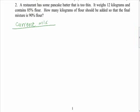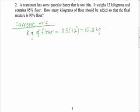It wants to know how many kilograms of flour we need to add so that the final mixture is 90% flour. First figure out the current mix. How many kilograms of flour? It's right now 85% flour. What are we going to do to figure out how many kilograms is in the current mix? Lauren? 0.85 times 12. Good. 0.85 times 12, who has it? 10.2. Perfect. 10.2 kilograms of flour.